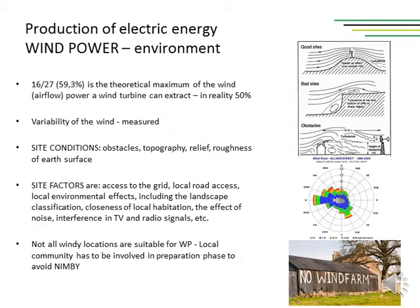Side factors to count on are access to the electro-distribution grid, local road access, local environmental effects, endangered bird or bat species in the vicinity, landscape classification — for example, natural parks and protected areas — closeness of local habitation, and the effect of noise. Noise is very important when planning a wind turbine in an urban area, as is interference in TV and radio signals. Not all windy locations are suitable for wind power. Wind turbines could harm birds and bats and have serious noise levels. All of this is the reason for the local community to be highly involved in the preparation phase, in order to avoid the NIMBY symptom — or 'not in my backyard.'